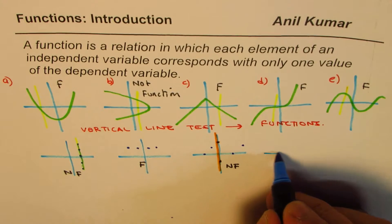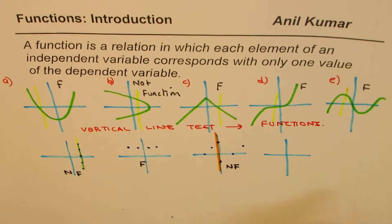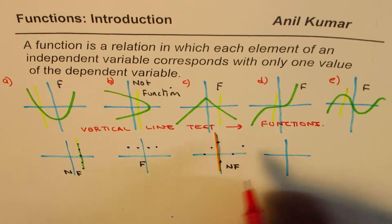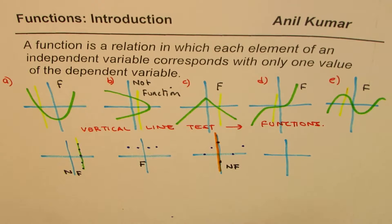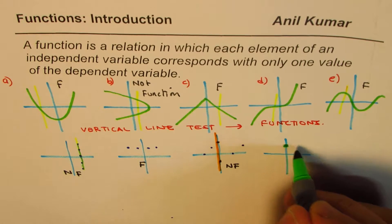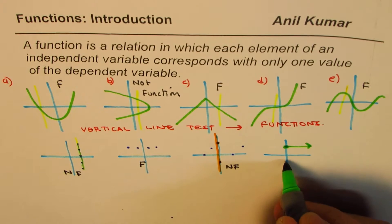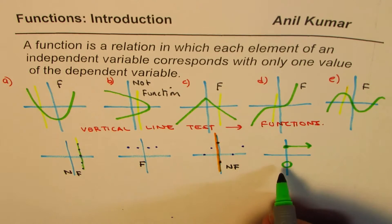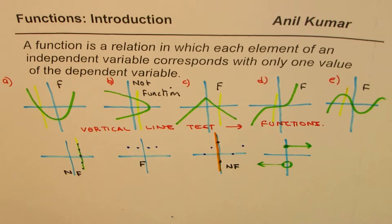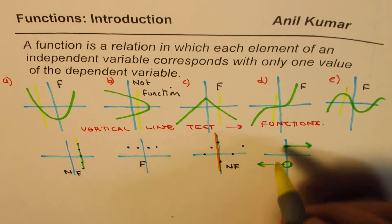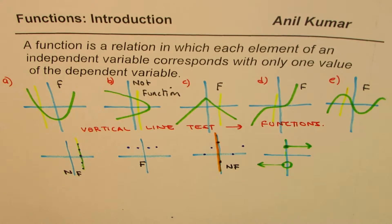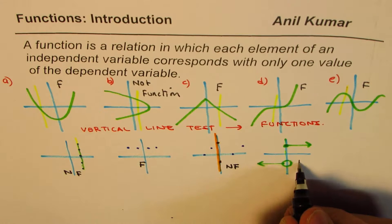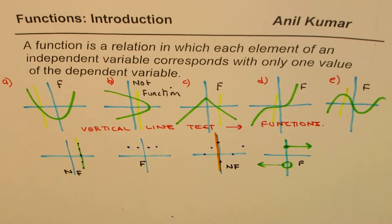Sometimes you may have holes. We could have a function which is kind of like this: a filled-up hole, then continuing, and an unfilled hole, then continuing further. Is this a function? If I draw a vertical line here, it only goes through one point, and therefore this one is a function. This one is a function.